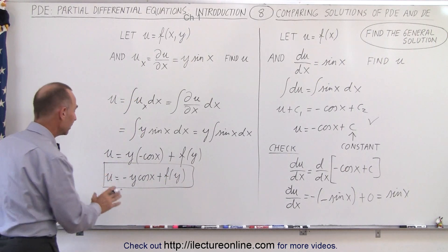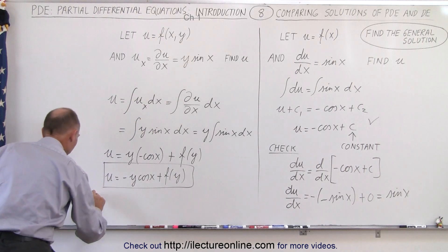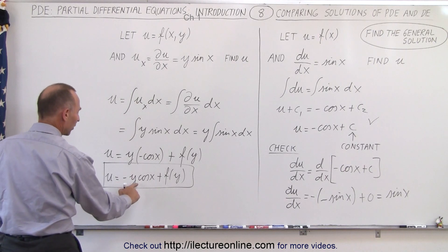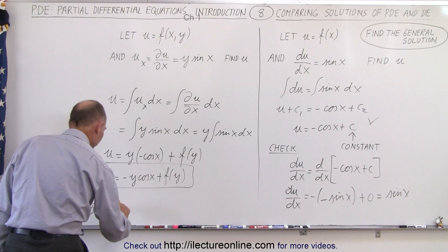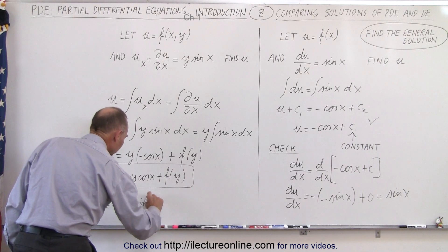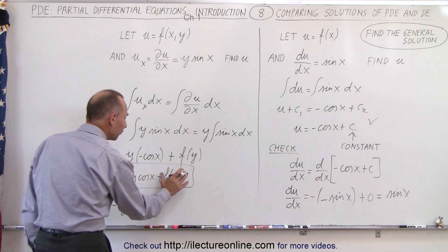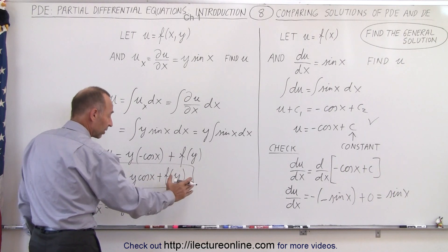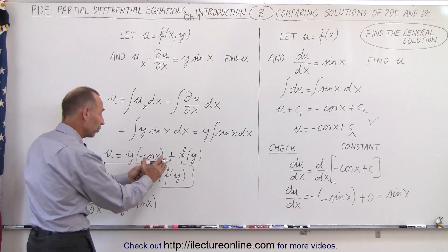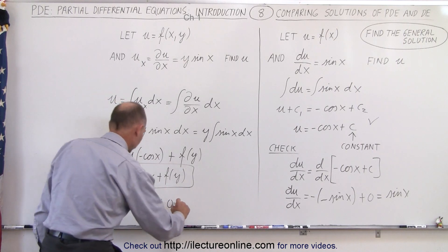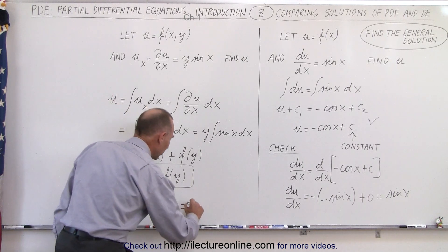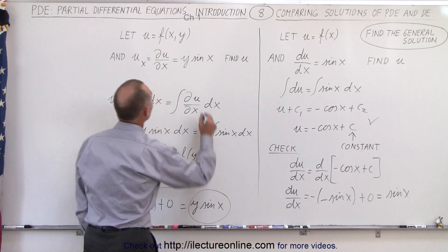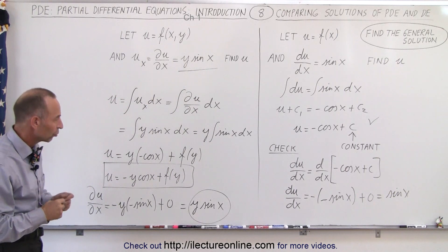To verify, let's take the partial derivative with respect to x and see what we get. The partial of u with respect to x: remember that y is a constant, and the derivative of cosine is negative sine, so it's negative y times the negative sine of x, plus the derivative with respect to x of f(y). Since f(y) only depends on y, and y is considered constant, the partial derivative of f(y) with respect to x is zero. So this becomes y times the sine of x, which is what we started with — confirming we have the right solution.